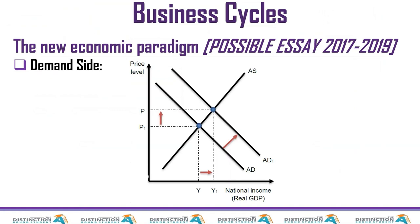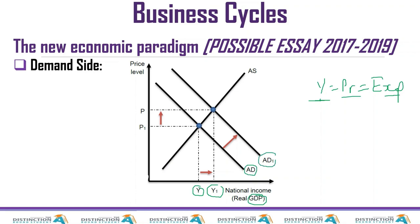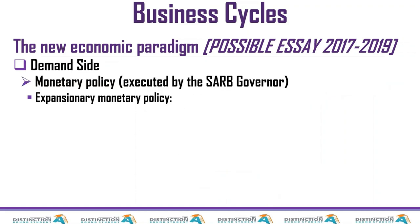Monetary and fiscal policies are implemented with the aim of increasing aggregate demand and the output produced by domestic firms in order to stimulate economic growth. Government wants to achieve real growth in GDP — aggregate income. Since income equals production equals expenditure, any demand side policy will result in aggregate demand shifting from AD to AD1.